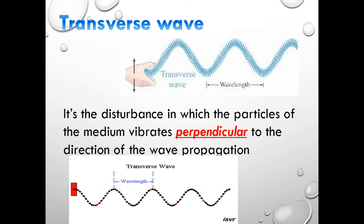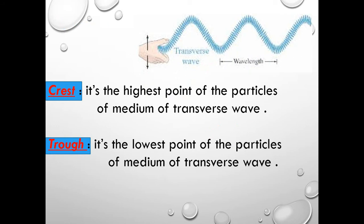The transverse wave is the disturbance in which the particles of the medium vibrate perpendicular to the direction of wave propagation. In a transverse wave, the highest point where the medium vibrates is called the crest, and the lowest point is called the trough. So a transverse wave consists of crests and troughs.